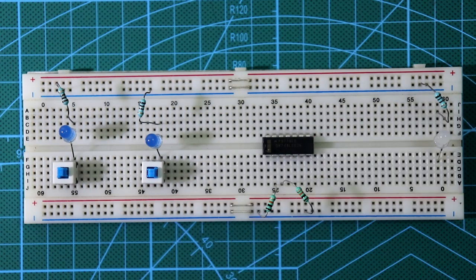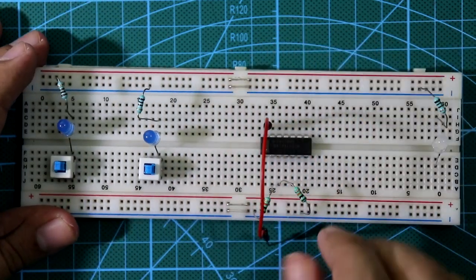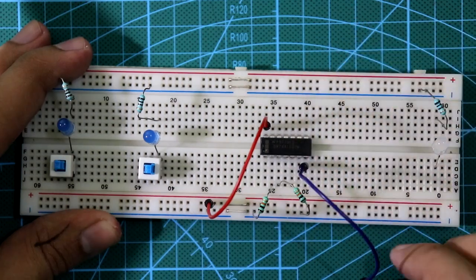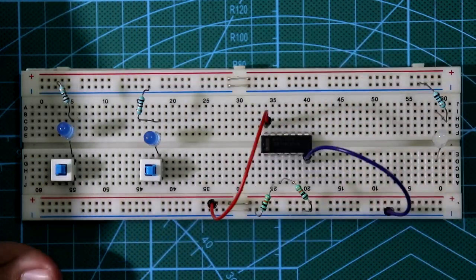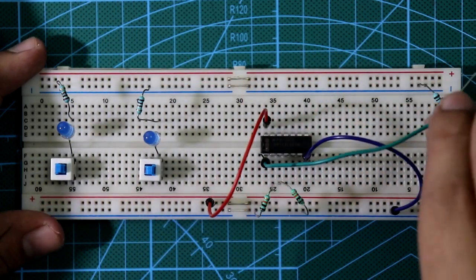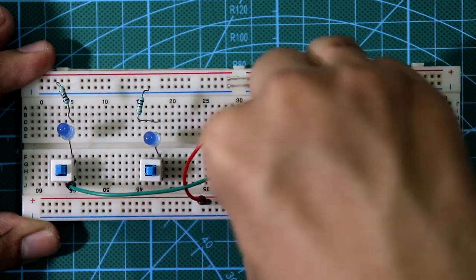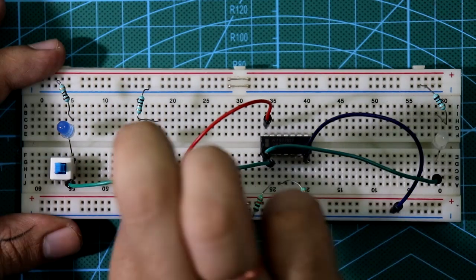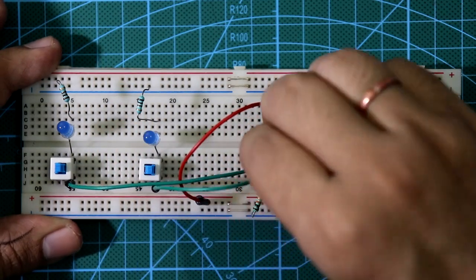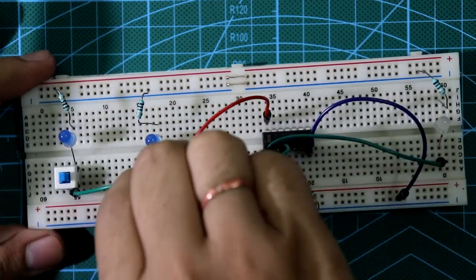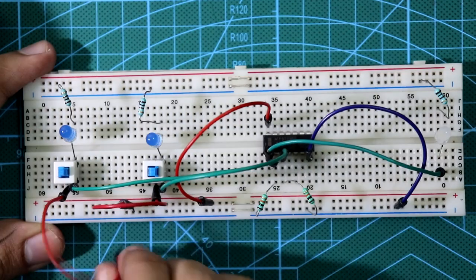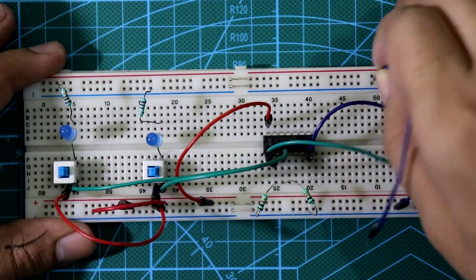Connect pin number 14 to plus VCC, pin number 7 to ground. Connect pin number 1, that is output, to the output LED. Pin number 2 to input A, connect input B to pin number 3. The other end of the switch is connected to plus VCC for both switches. Connect both the ground pins.